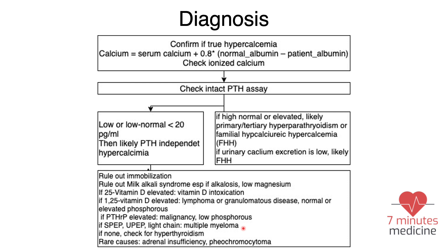You may also check for hyperthyroidism with a thyroid profile, and you can rule out rare causes like adrenal insufficiency and pheochromocytoma. However, if the PTH comes back high-normal or elevated, this is most likely primary or tertiary hyperparathyroidism.